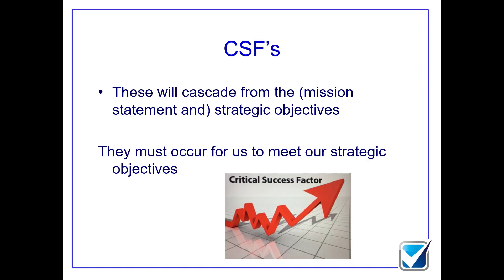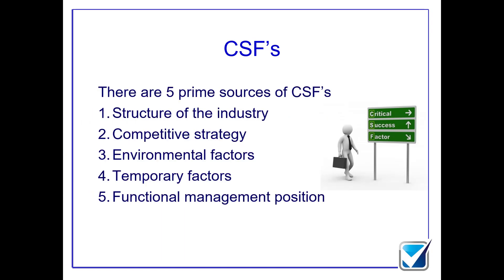The critical success factor cascades down from our mission statement and our strategic objectives. CSFs are things that have to happen if we want to hit our strategic objectives — things that have to happen if we want to be seen to be achieving our mission. These critical success factors can come from five main areas. The first is the structure of the industry — for example, a car manufacturer and a tuition provider would have completely different types of critical success factors because they operate completely differently. The second is competitive strategy, such as Porter's generic strategy of cost leadership or product differentiation, which will lead to different types of critical success factors.